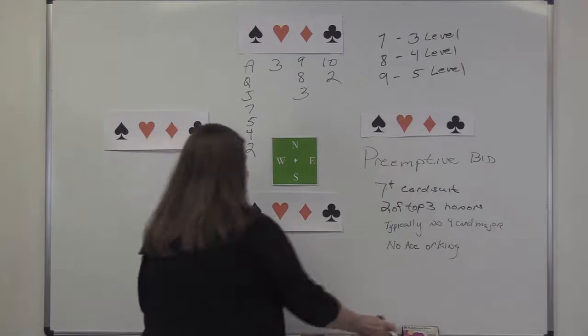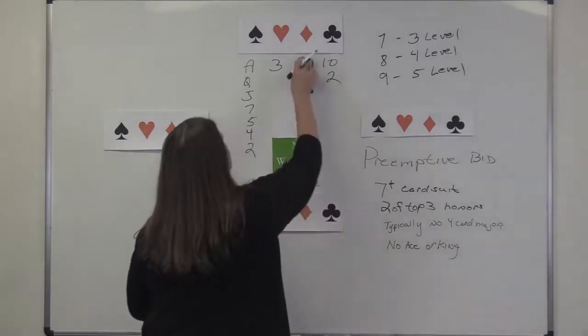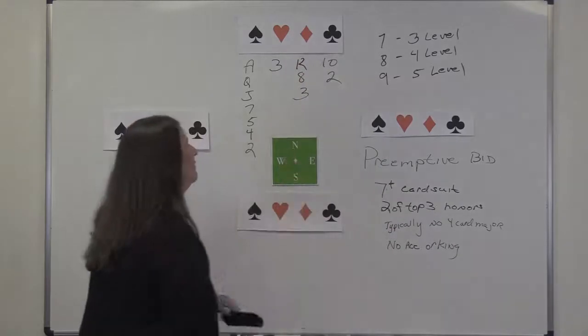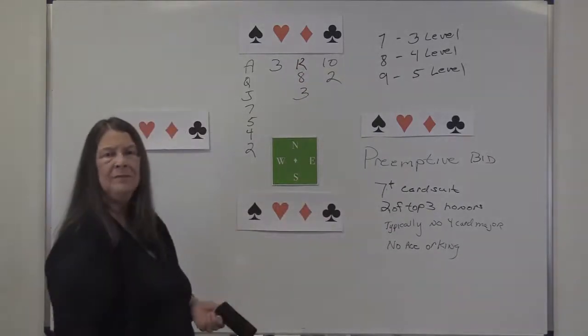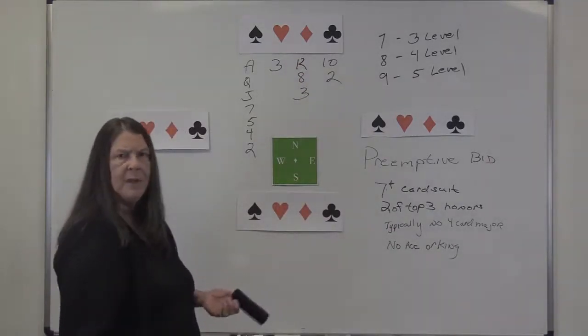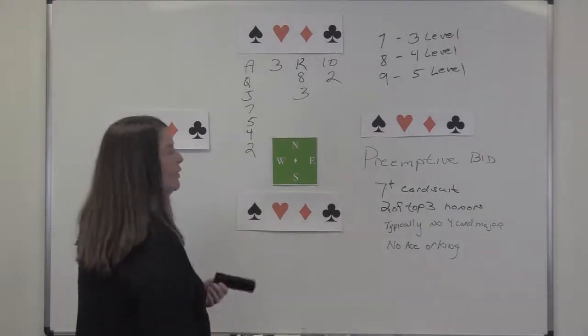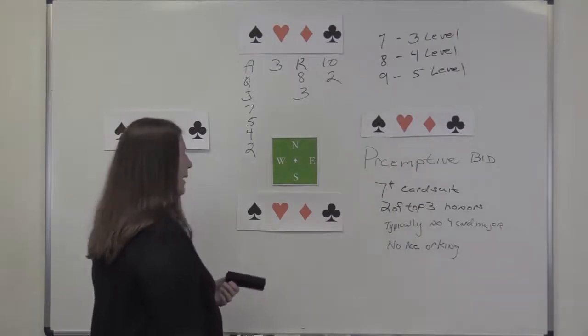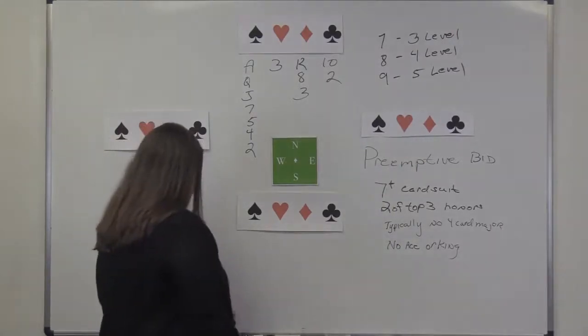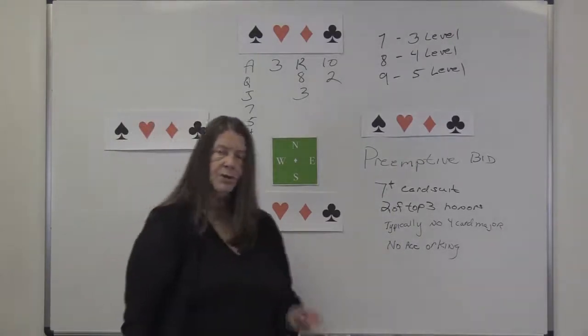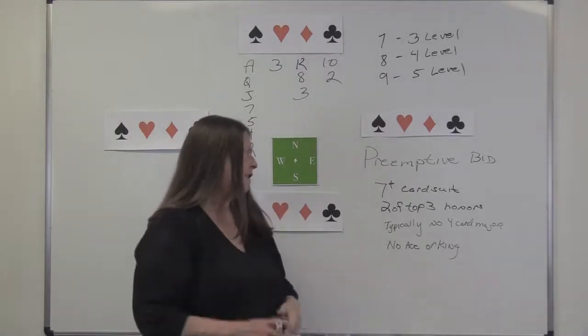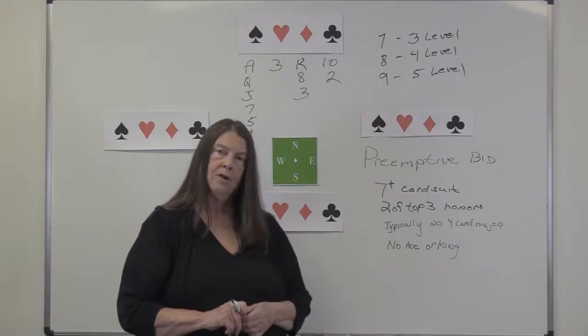What happens if you have a king outside? Well, you still got that seven-card suit, don't you? Do you know that I've just opened one. I would open one spade because that hand, I think, is good enough for an opening bid. All right. So a preempt: seven-card suit at least, two of the top three honors, no ace or king in another suit, typically no four-card major.